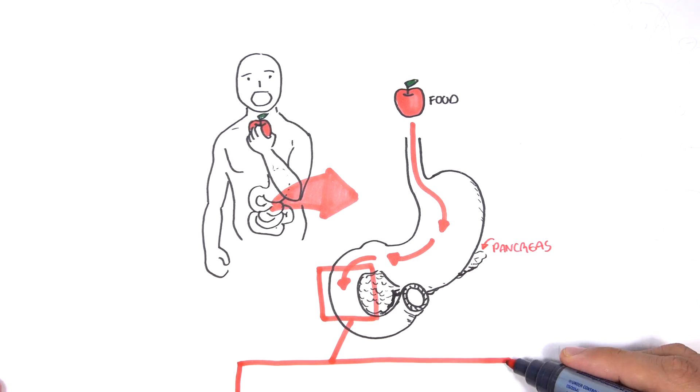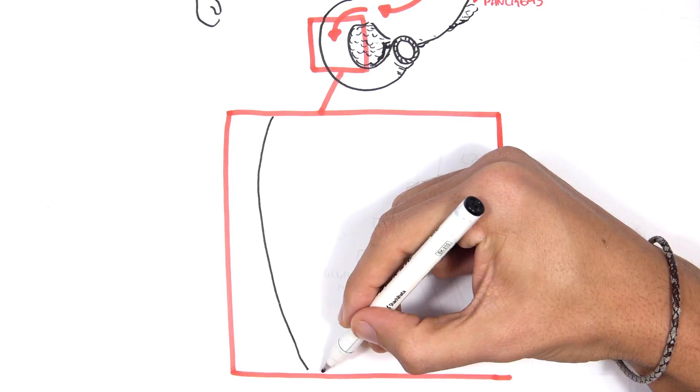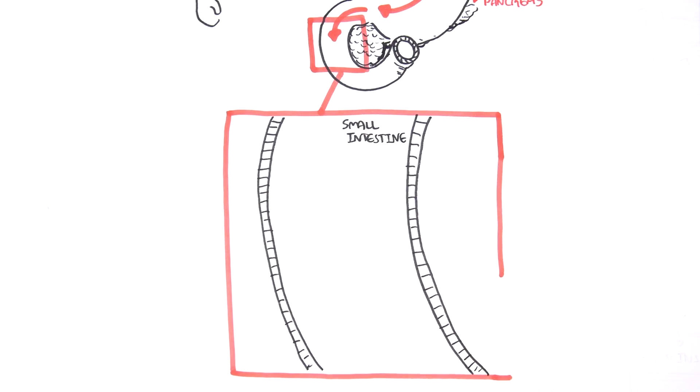Let us zoom into this area here. One of the final products of food digestion is glucose, commonly known as sugar.